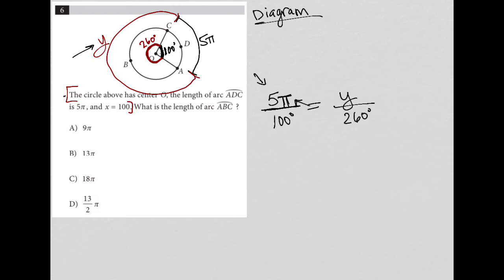All that's left for me to do is cross multiply. I have 1,300π equals 100y. I then divide both sides by 100, cross out the zeros, and I'm left with 13π equals y. There is my length of arc ABC.